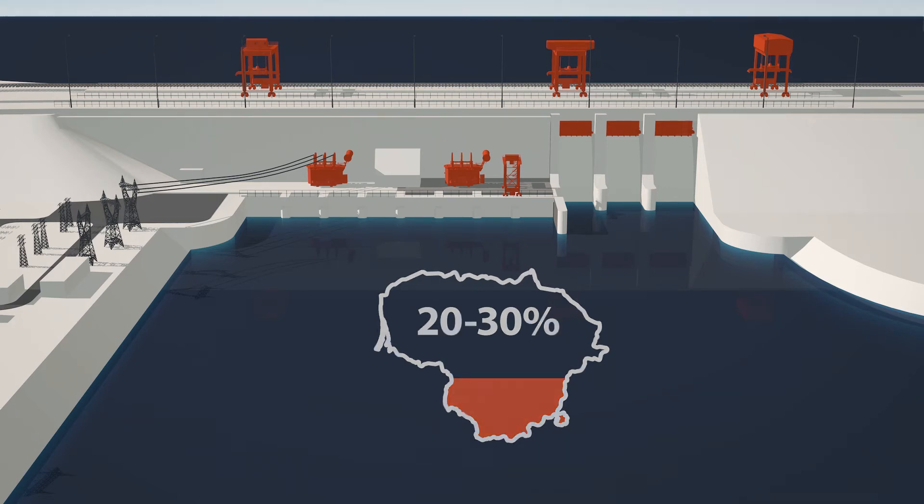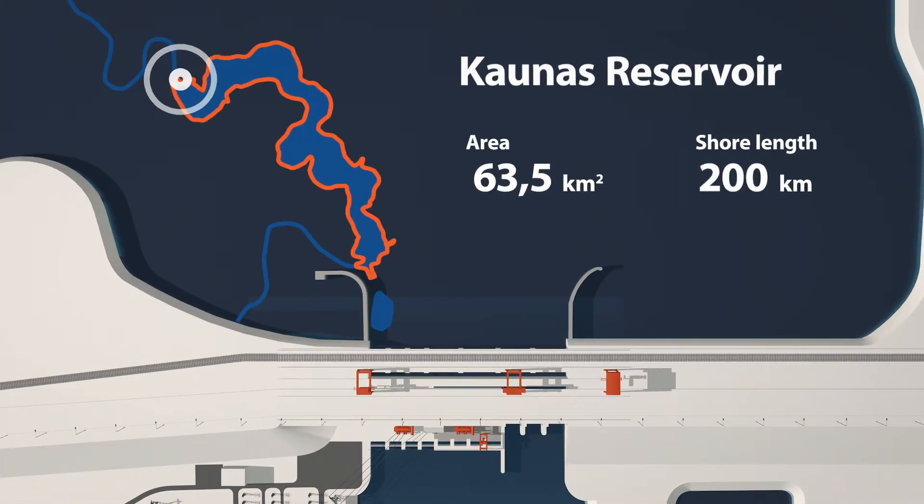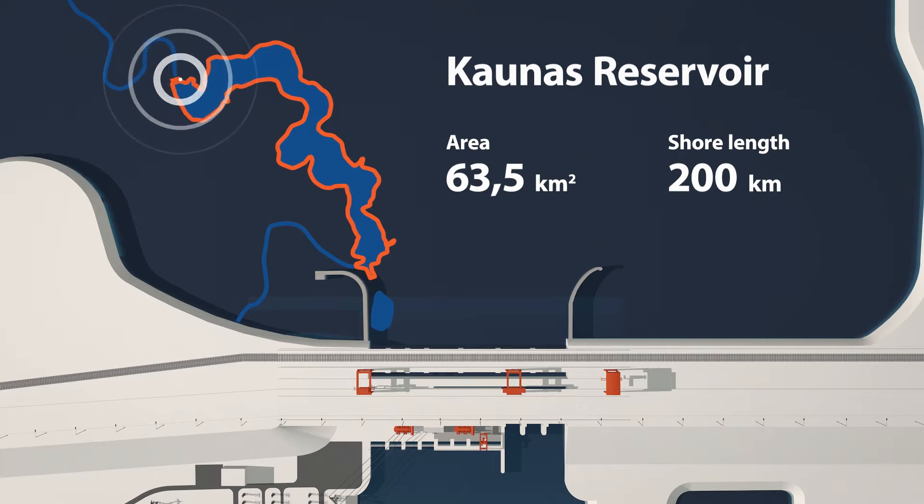When the hydroelectric power plant was being built more than half a century ago, the Nemunas River was dammed up to create the Kaunas Reservoir, now called the Kaunas Lagoon. That's now the largest artificial body of water in Lithuania.